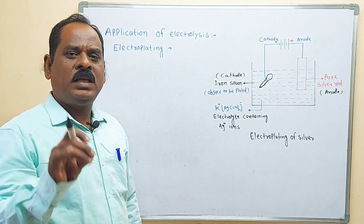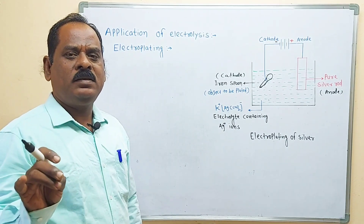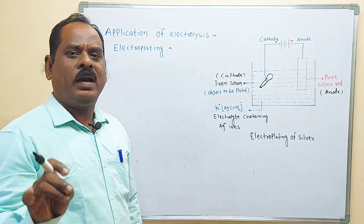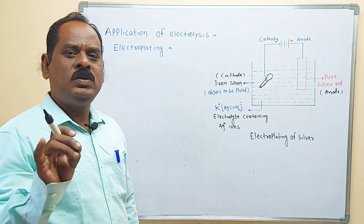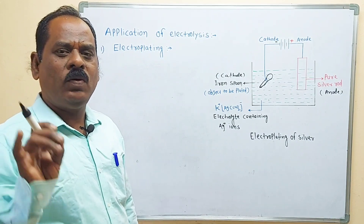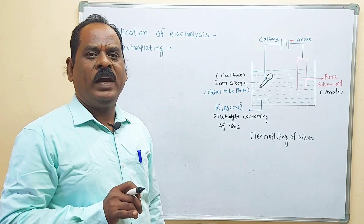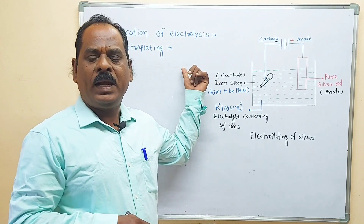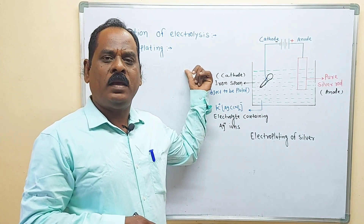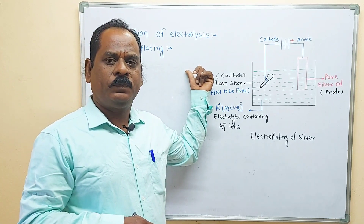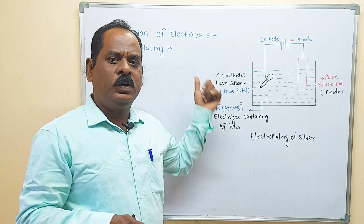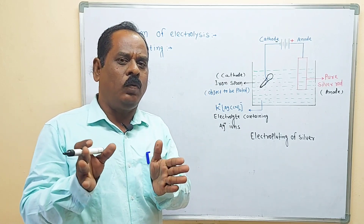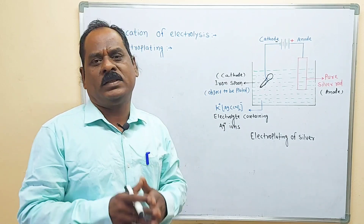Generally, silver ornaments, gold ornaments, and one-gram jewelry ornaments are manufactured by the electroplating process. Now let's understand how to carry out the electroplating process.